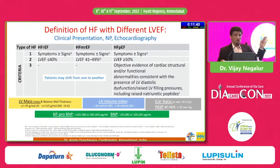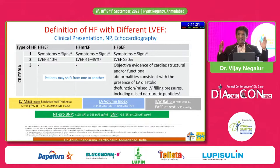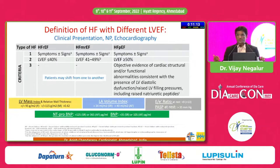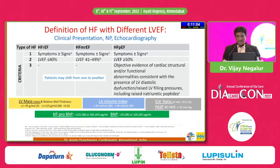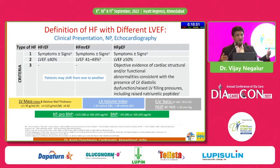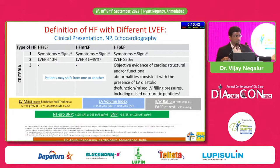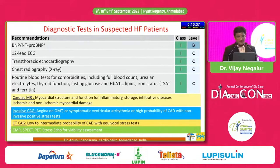Heart failure is also classified based on ejection fraction on echocardiography. Ejection fraction 40% or less is HFrEF — heart failure with reduced ejection fraction. Ejection fraction 41–50% is HFmrEF — mid-range or mildly reduced ejection fraction. Ejection fraction 50% or more with heart failure symptoms, signs, and additional echocardiographic evidence such as increased LV mass or LA dilatation is HFpEF — heart failure with preserved ejection fraction. These are not strict boundaries; a patient with HFrEF at 30% may improve to 45% with treatment, or vice versa.